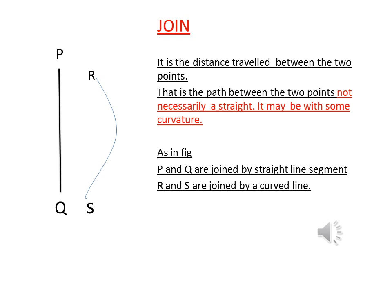It is not necessary that the line connecting the two points is a straight line — it can be a curved line. As shown in the figure, P and Q are connected by a straight line, whereas R and S are connected by a curved line. Both lines, whether straight or curved, are the joins between the two points.